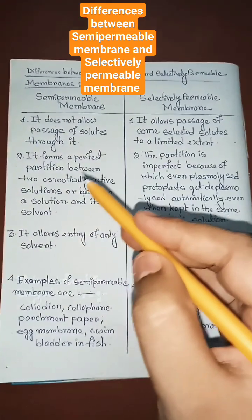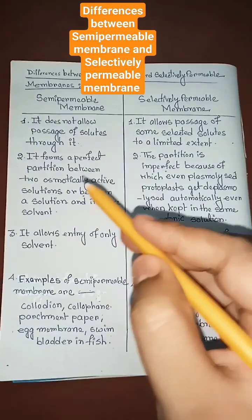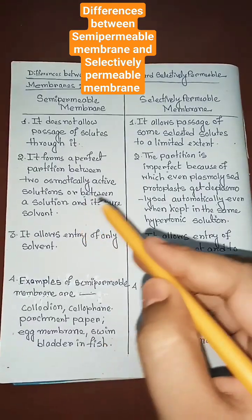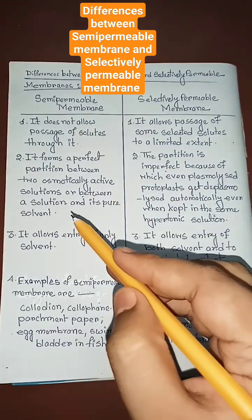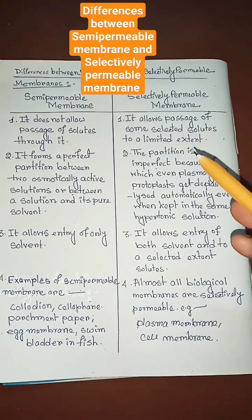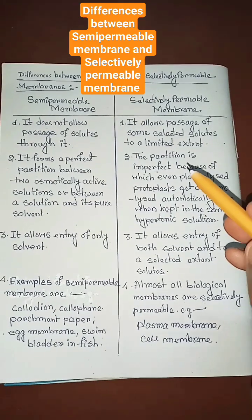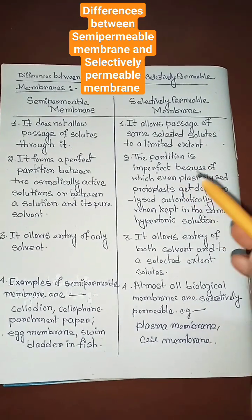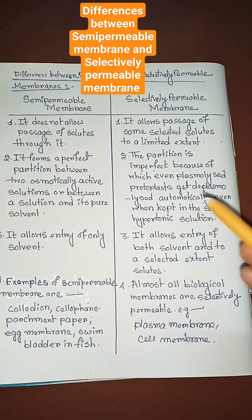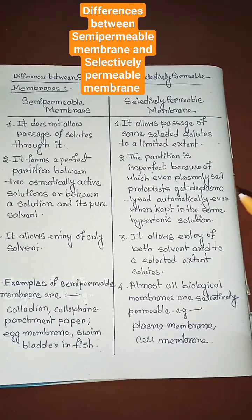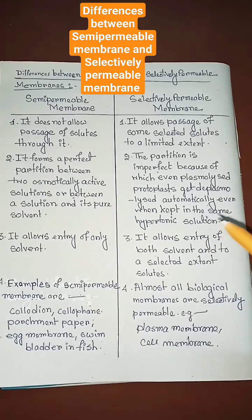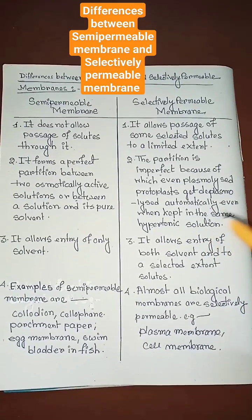A semi-permeable membrane forms a perfect partition between two osmotically active solutions or between a solution and its pure solvent. In contrast, a selectively permeable membrane forms an imperfect partition, because of which even plasmolyzed protoplasts get deplasmolyzed automatically even when kept in the same hypertonic solution.